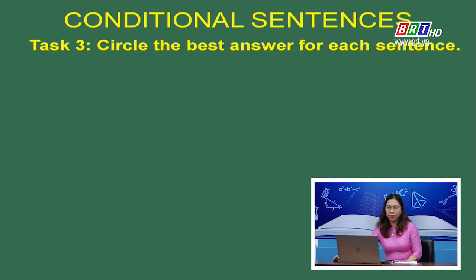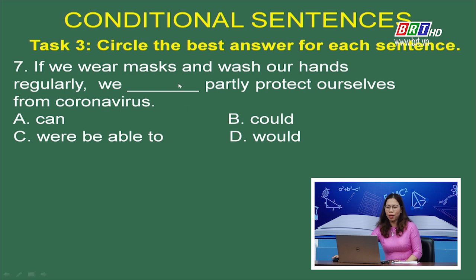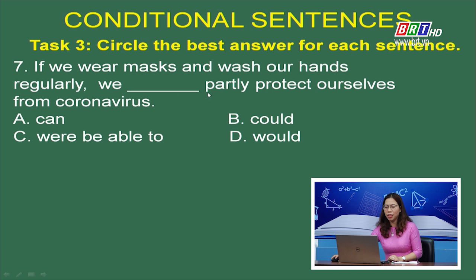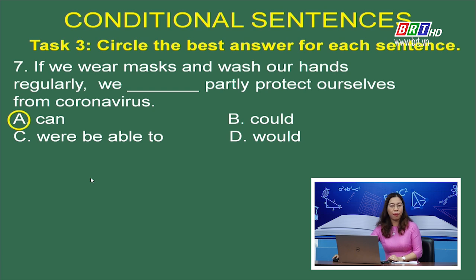Sentence 7: If we wear masks and wash our hands regularly, we (___) partially protect ourselves from coronavirus. 4 lựa chọn: A. Can; B. Could; C. Would be able to; D. Would. Mệnh đề if chia ở thì hiện tại đơn — wear và wash đi với chủ ngữ we — đây là câu điều kiện loại 1. Mệnh đề chính dùng động từ khiếm khuyết ở hiện tại — chỉ có lựa chọn A (can) là phù hợp. Correct. Cô chúc mừng bạn nào có đáp án A.